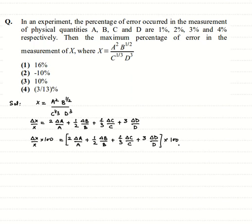That will be percentage error in A, half into delta B by B into 100, that's percentage error in B, and likewise for C and D. Now we simply fill in the values. This will be 2 times the percentage error in A which is given as 1%, so this is 1